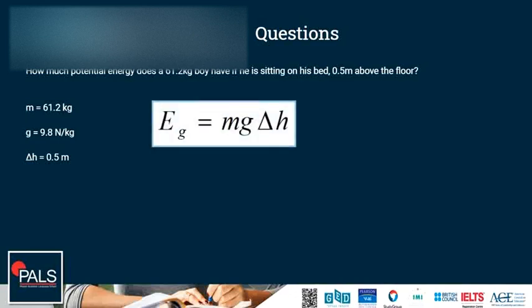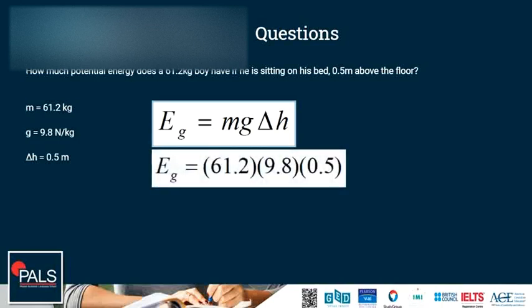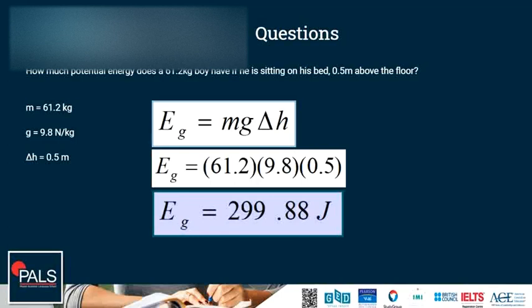We use the gravitational potential energy formula: mass times gravity times difference in height. That is 61.2 times 9.8 times 0.5. And this will give us 299.88 joules.